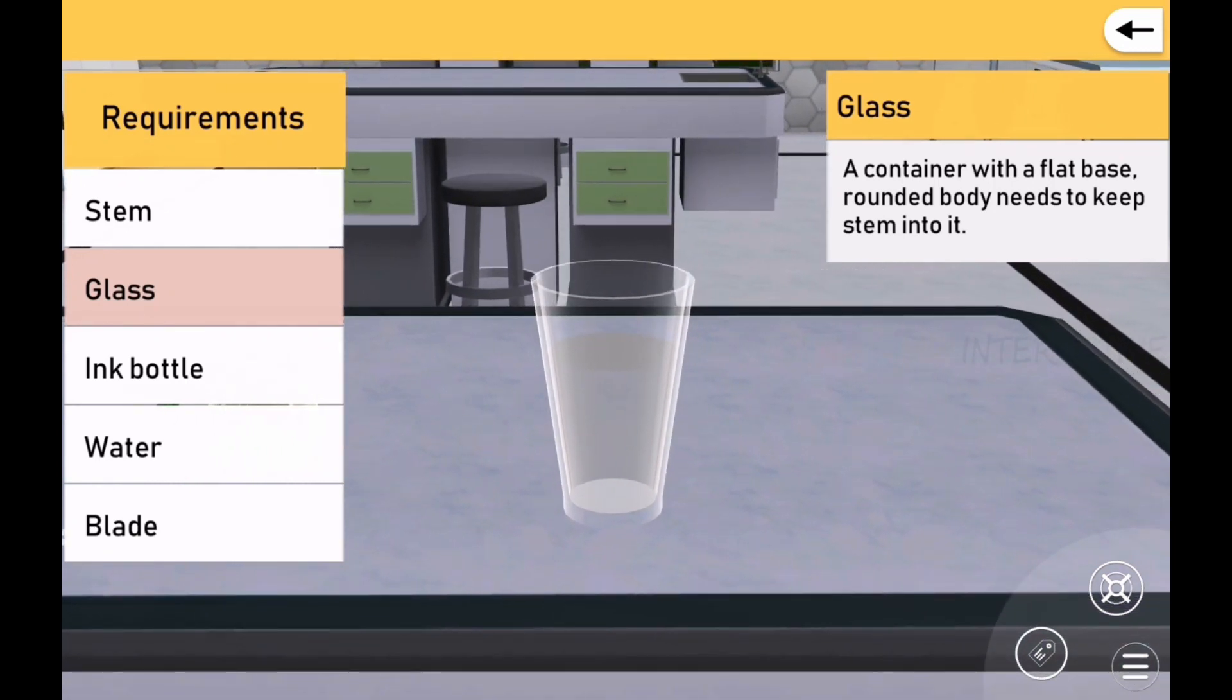फ्लाट बेज वाला एक गूला कार कंटेनर, जो पौधे की शाखा रखने के लिए प्योगी होगा।